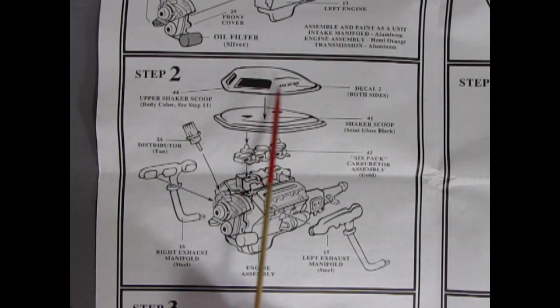Here we have our distributor going in place as well as our six-pack carburetor, shaker hood scoop, and the hood scoop top. And there is a decal here for the 440 six-pack, which is nice because in some models from like Monogram and that, you actually have to paint this on and it's really tiny. So it's good that they have a decal for it.